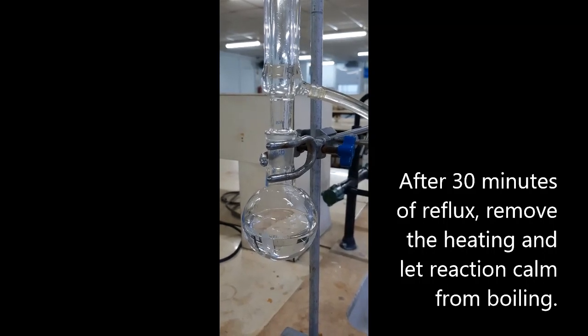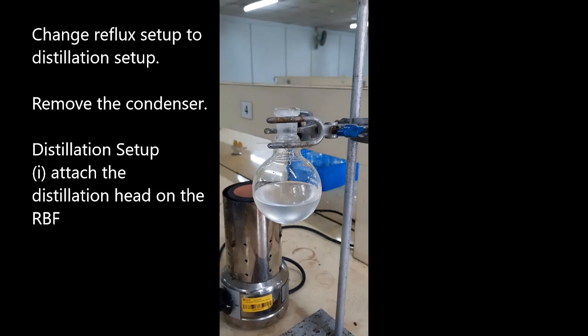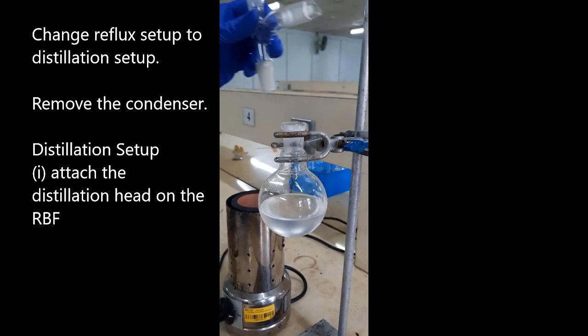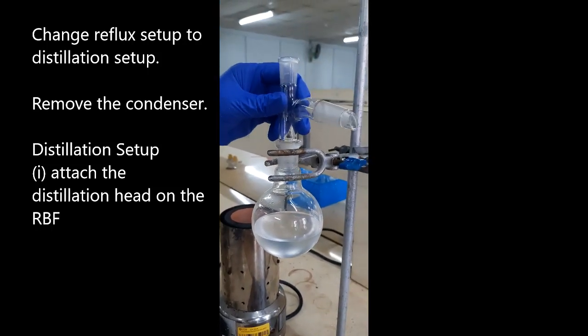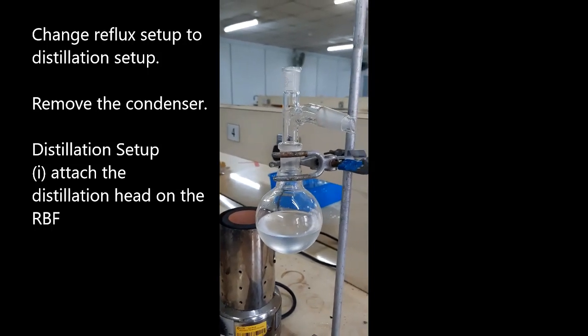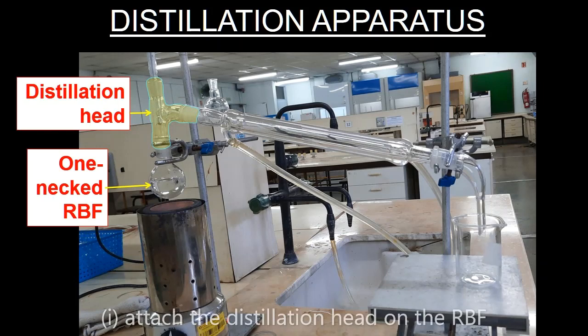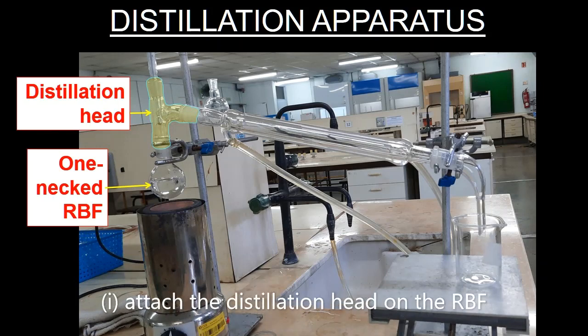Then change the apparatus to a distillation setup. Remove the condenser and attach the adapter to the round bottom flask. Follow the correct sequence of assembling a distillation apparatus. The assembly begins by attaching the adapter to the round bottom flask.